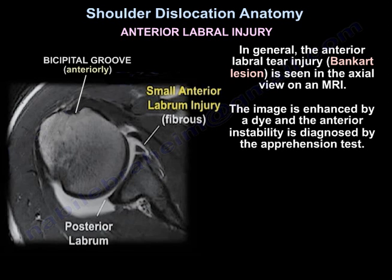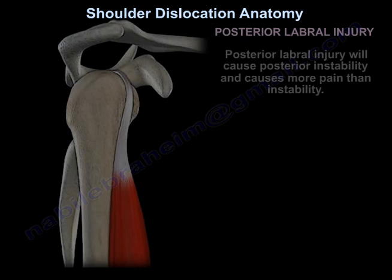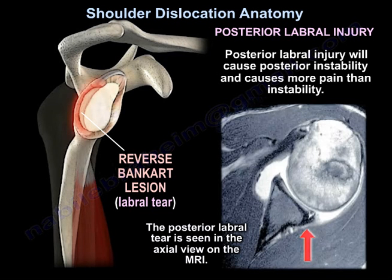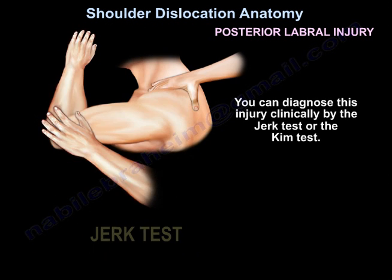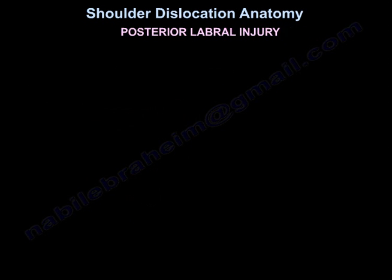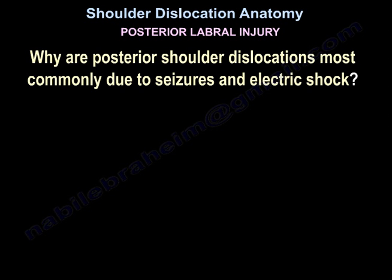The anterior glenohumeral ligament is seen in the axial view on MRI. The image is enhanced by dye. Anterior instability is diagnosed by the apprehension test. The bicipital groove is located anteriorly. Posterior labral injury will cause posterior instability and causes more pain than instability. The posterior labral tear is seen in the axial view on MRI.